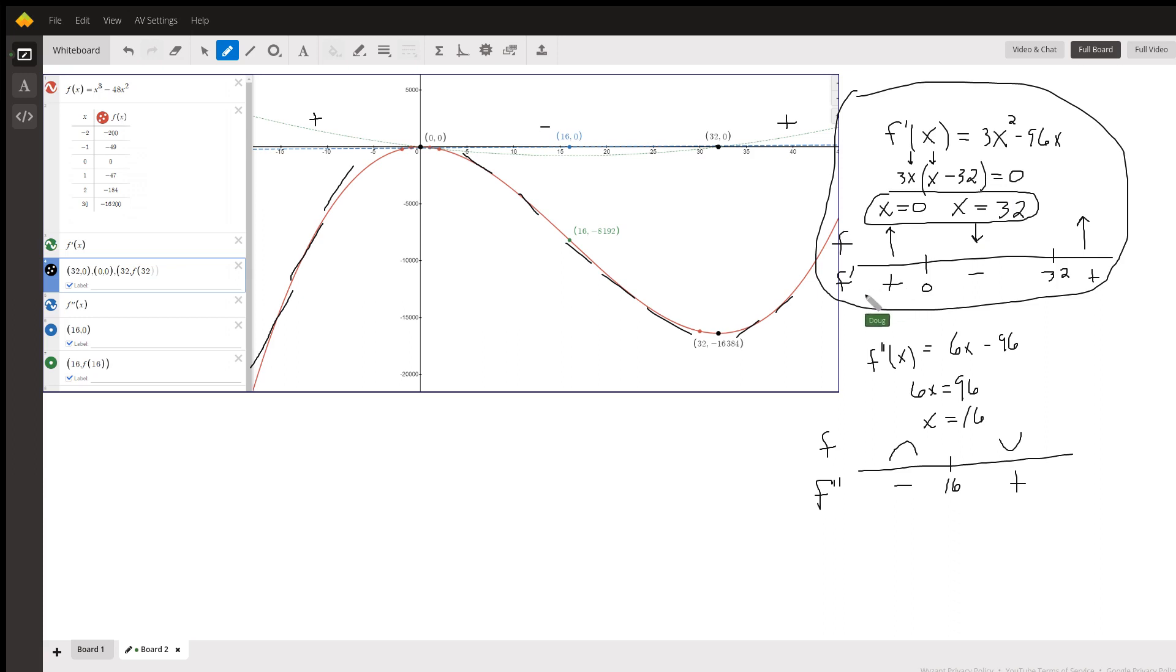The first derivative is positive. That means the tangent lines are going uphill, which tells you that the original function is increasing. So to the left of 0, the original function is increasing.